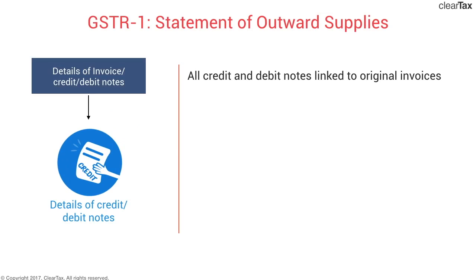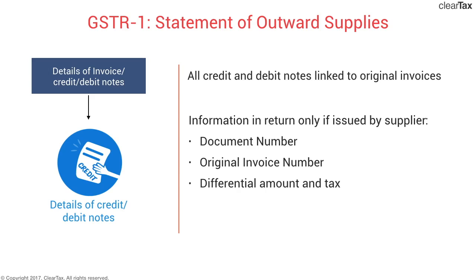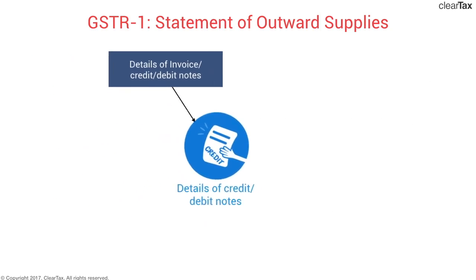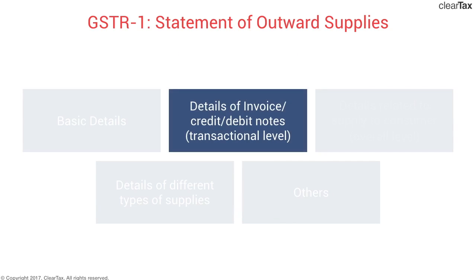That is why the return asks for details of credit and debit notes linked to an original invoice. As a supplier filing the statement of outward supply, if you have issued such a note you must provide: the document number (the credit or debit note number), the original invoice number to which the note is linked, the differential amount — the change in invoice value — and the tax on that differential amount. As with invoices, this information must also be split for normal and reverse charge supplies. That covers the details of the second category — invoices and credit/debit notes — with the remaining three categories to be covered in the next video.